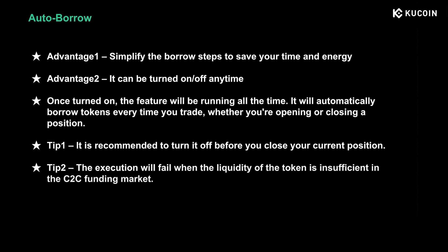Let's look at the advantages of each setting and when to turn them off to avoid unnecessary loss. Auto-borrow has two advantages: it simplifies the borrowing steps, and you can turn it on and off anytime. However, auto-borrow will automatically borrow tokens every time a trade is executed, whether you are opening or closing a position. For example, if you've placed a long order for BTC and want to take profit by closing your position, you need to turn off auto-borrow before placing the sell order — otherwise the system will continue to borrow BTC for you. Auto-borrow may also fail if the token in the C2C market lacks liquidity.